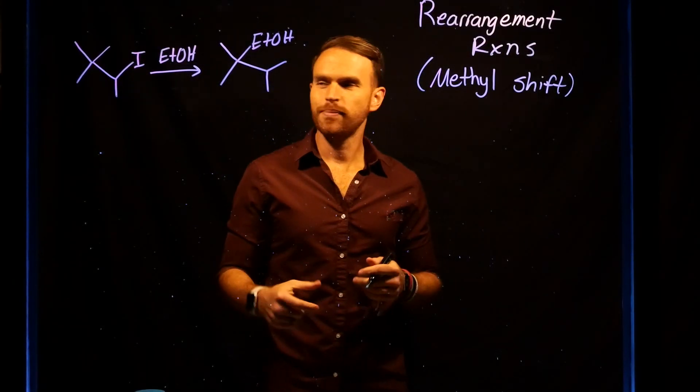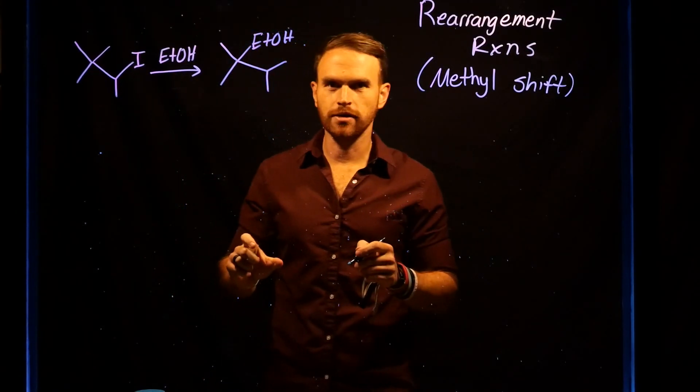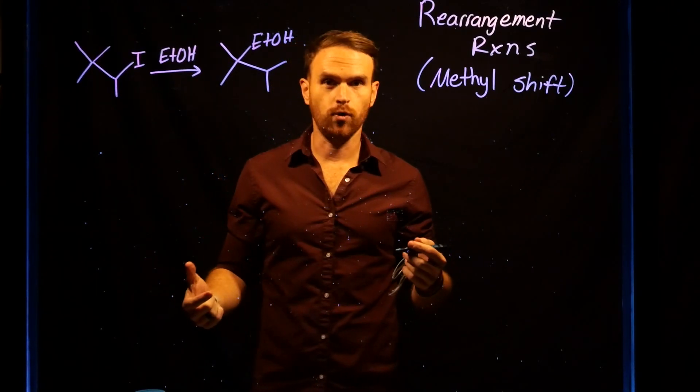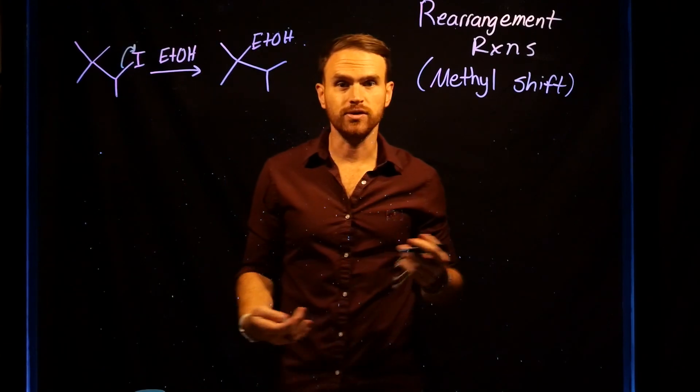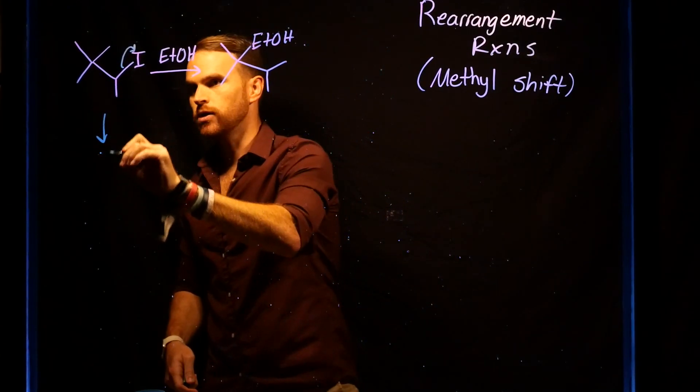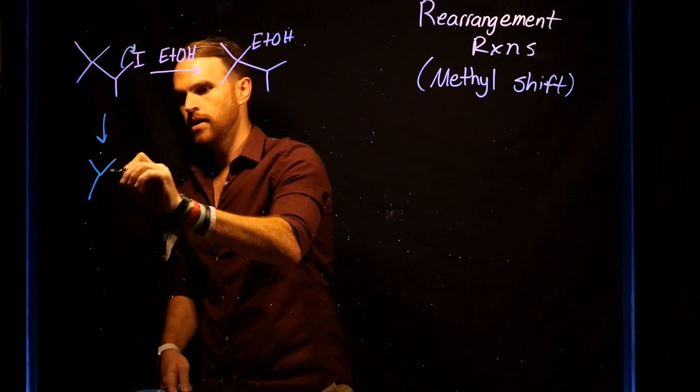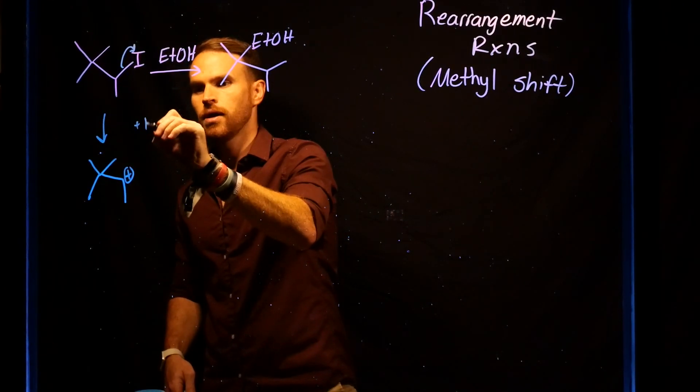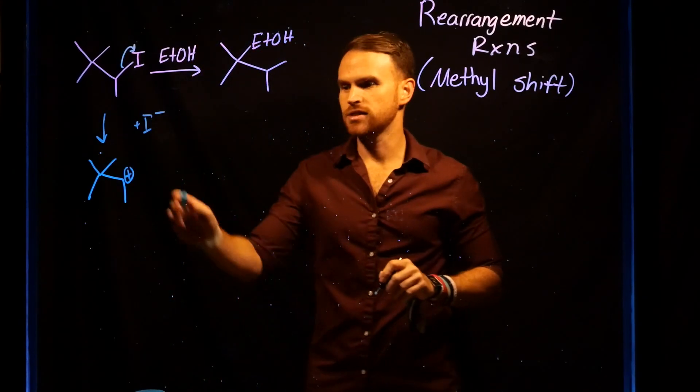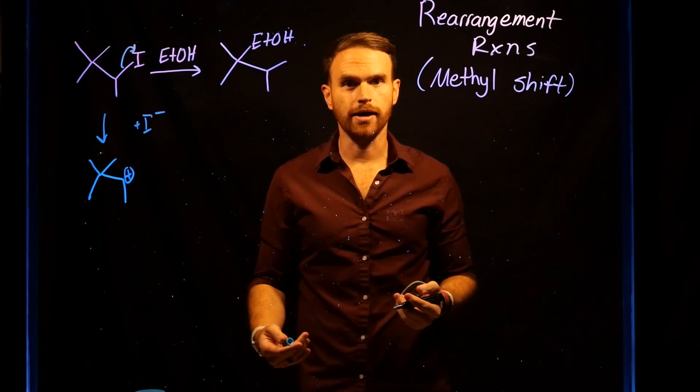The first step of this rearrangement reaction takes place via an SN1 mechanism, where the first step is that your leaving group is going to leave. This is going to generate a secondary carbocation. Your iodide has left, and this has generated a secondary carbocation.